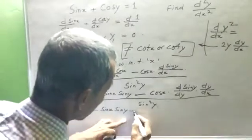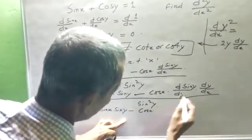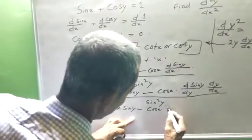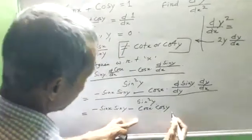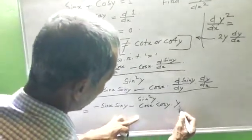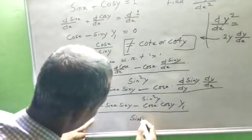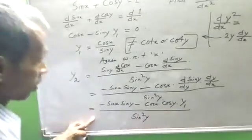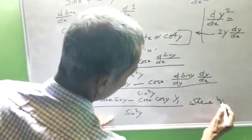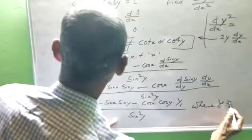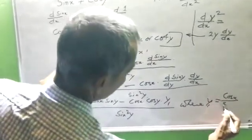Minus cos x into this one, cos y, into y₁ by sin² y, where y₁ equals cos x by sin y.